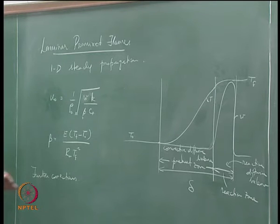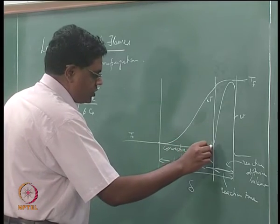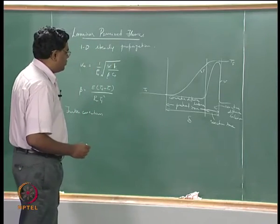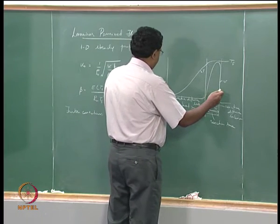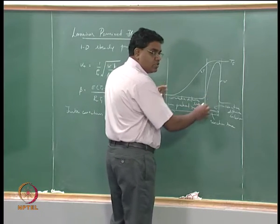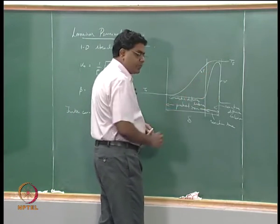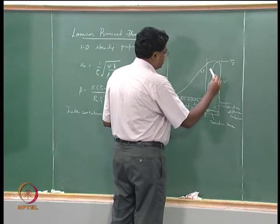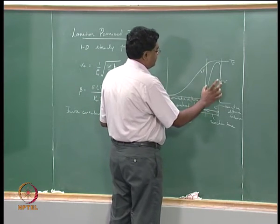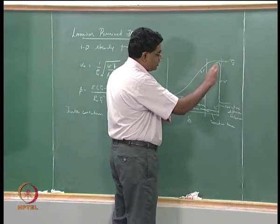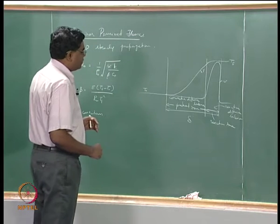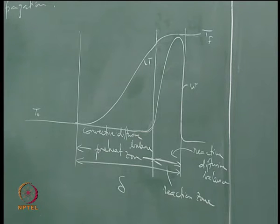We can now do further corrections. What we had done was assume that W is constant across this region, and now we say W is approximately constant across this region. That is not very difficult to imagine because it rises very steeply within this region, reaches a peak value, and then drops steeply back. So it is okay.